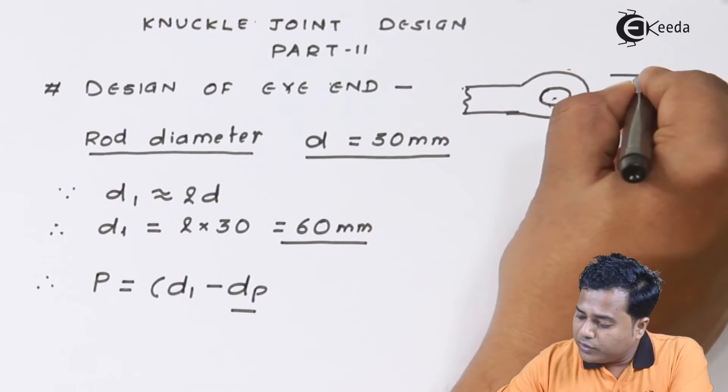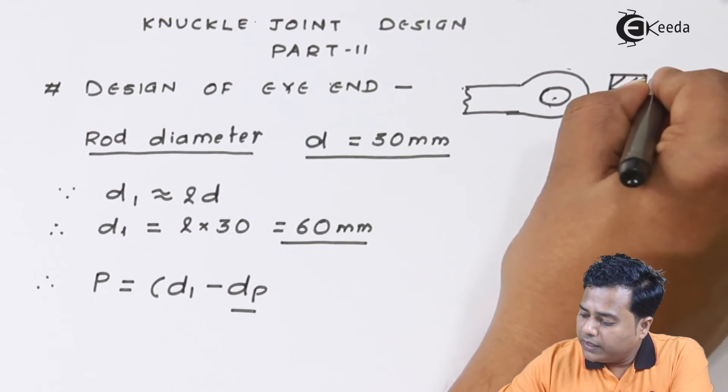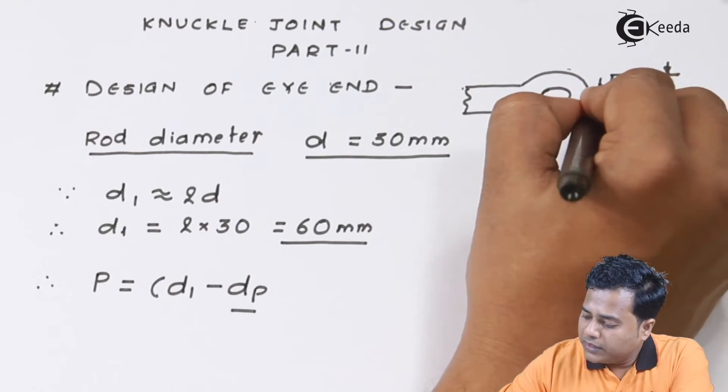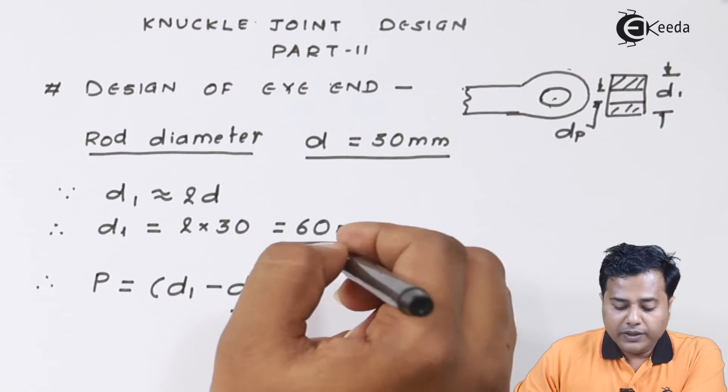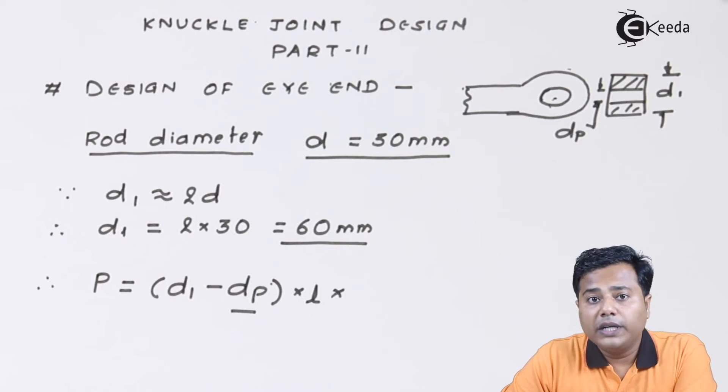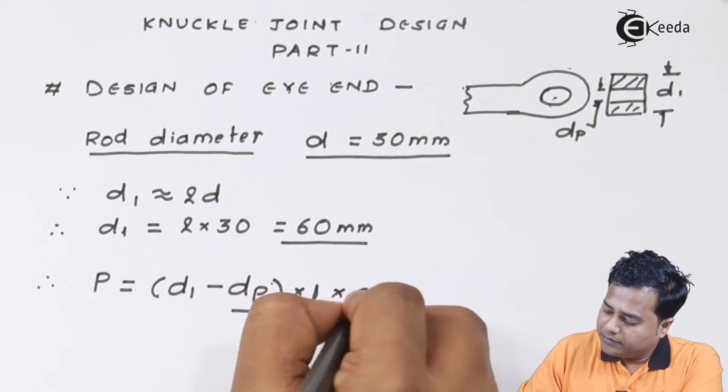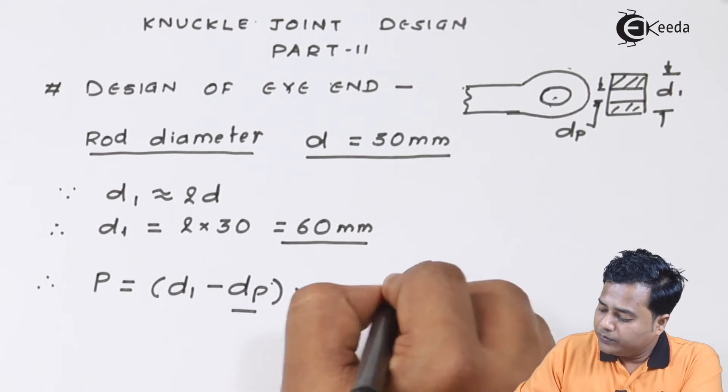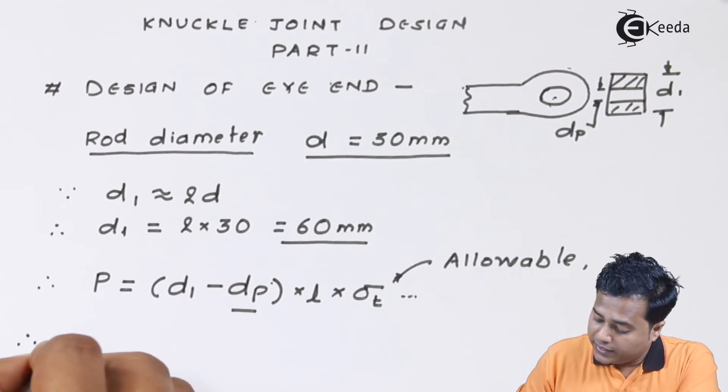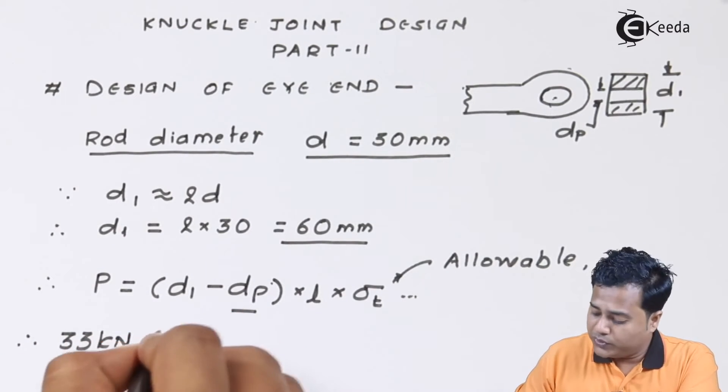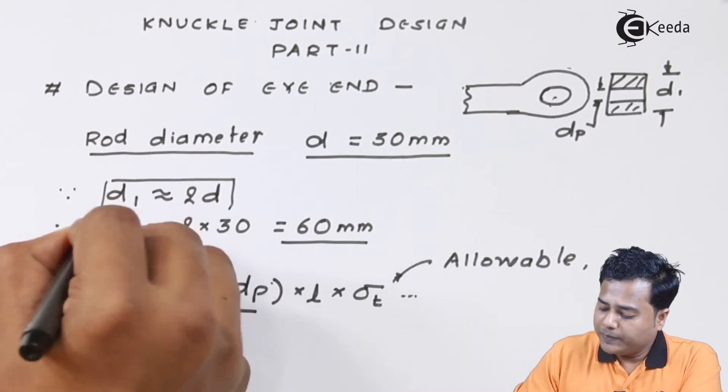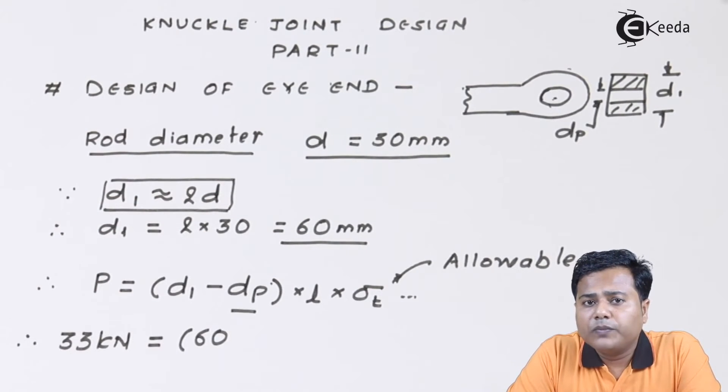So the projected area becomes d₁ minus dp into the length of the eye section (L) into tensile stress σt. We know that this is the allowable value. This is a standard relation. Based on that relation we get some value and we have to see whether that value is safe or not.